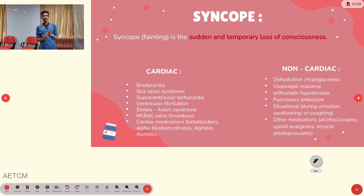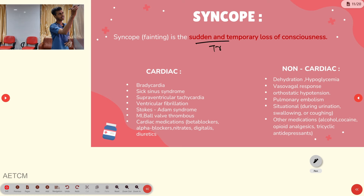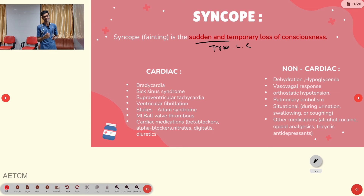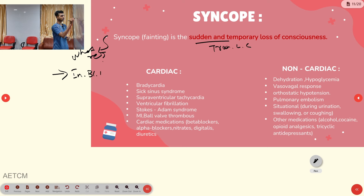The third condition is syncope — also known as fainting. It is a sudden, temporary (transient) loss of consciousness, typically lasting less than 5 to 10 seconds. The reason is an interruption of blood supply to the brain.